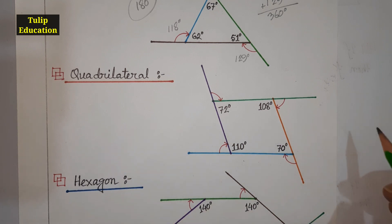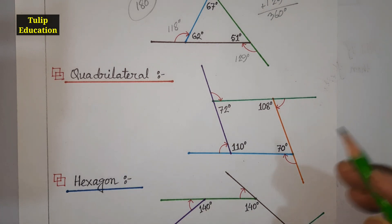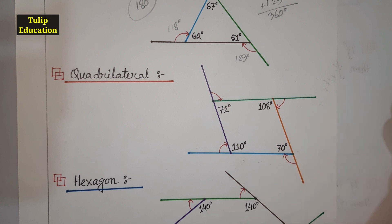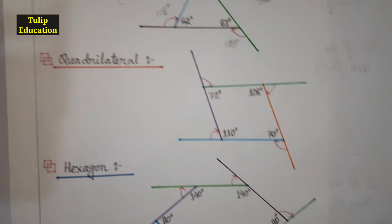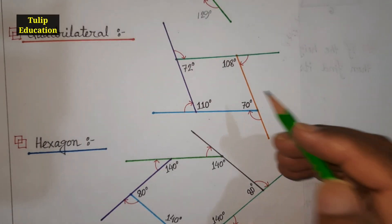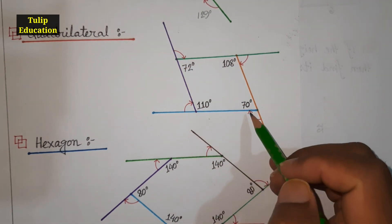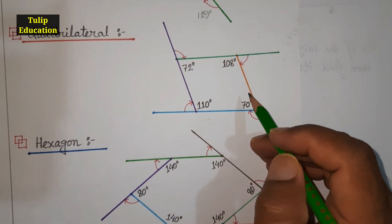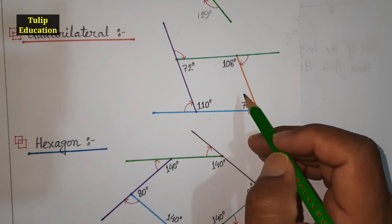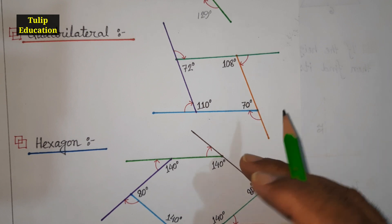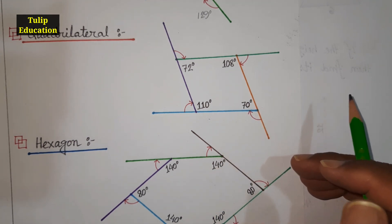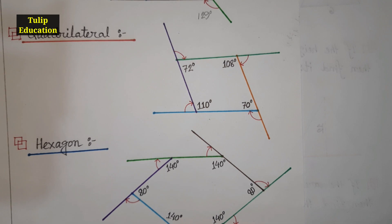Let's verify this for a quadrilateral. A quadrilateral is a four-sided polygon and it has four angles. The sum of the interior angles of every quadrilateral is 360°.